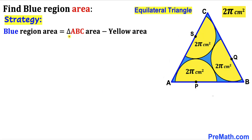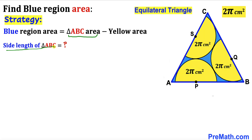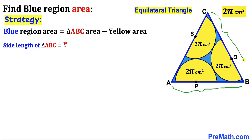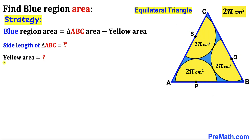Our task is to calculate the area of triangle ABC. To do that we must find the side length of triangle ABC. Since we are dealing with an equilateral triangle, all side lengths AB, BC, and AC are equal. The yellow region area is easy to calculate: 2π + 2π + 2π gives us 6π cm².